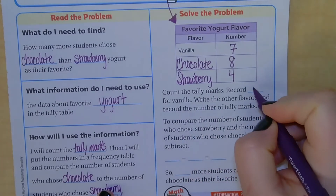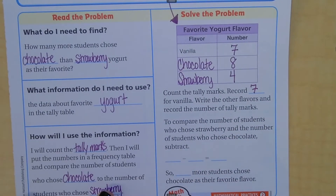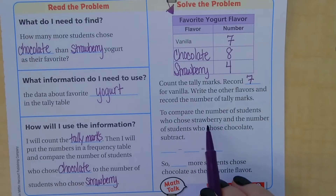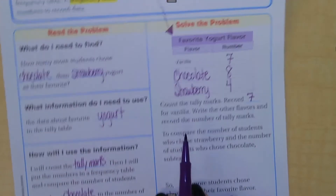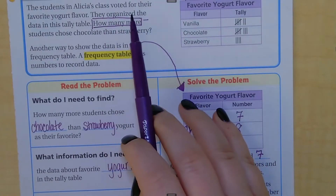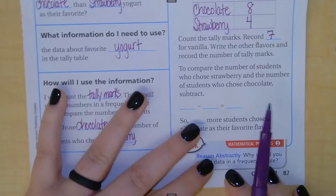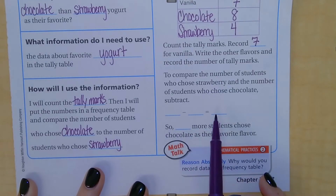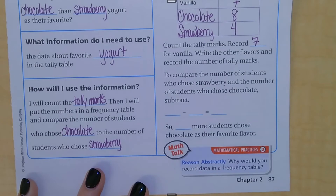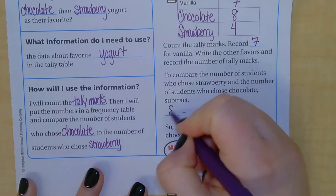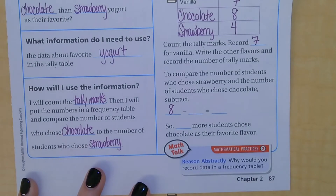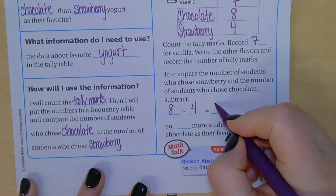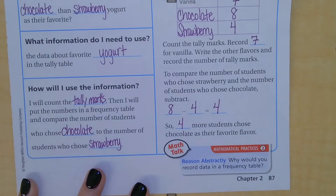We counted the tally marks and recorded seven for vanilla, then wrote the other flavors and recorded the number of tally marks for those as well. To compare the number of students who chose strawberry and chocolate, we subtract — and remember, 'how many more' means we're going to subtract. The larger number always goes first. Chocolate had eight votes and strawberry had four votes, so eight minus four equals four. Four more students chose chocolate as their flavor.